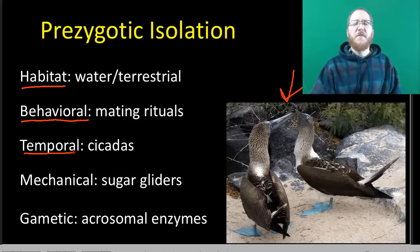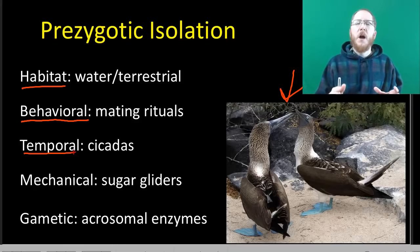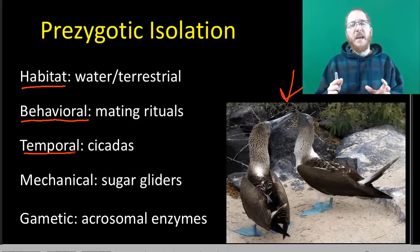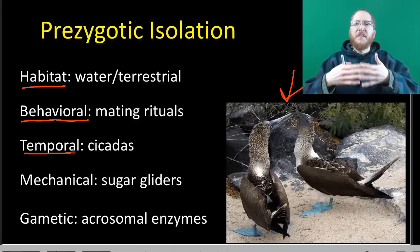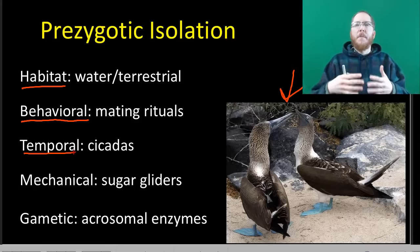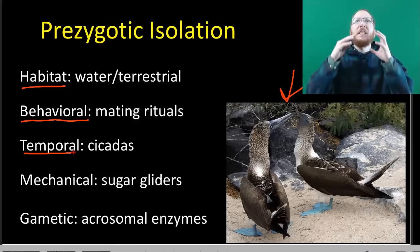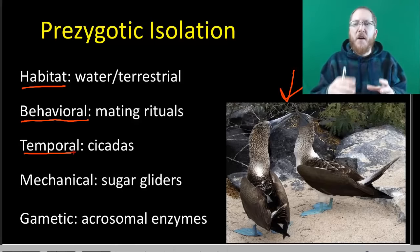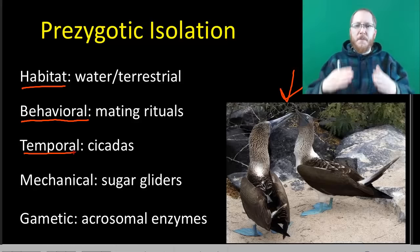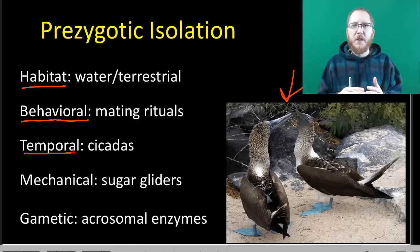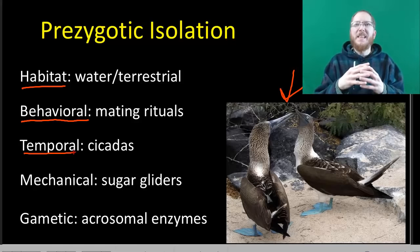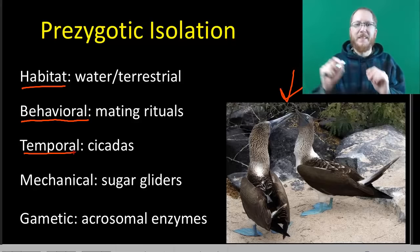Temporal isolation is if you're not reproducing at the same time. For instance, we have cicadas where periodic cicadas usually come out around July, and then there are dog day cicadas that come out in August. If they're not out trying to reproduce at the same time, they will not come into contact with each other, even if they're in the exact same place, the exact same environment, the exact same trees — because they're offset in time. So the habitat might be identical, the behaviors could even be identical, but they're just never going to be at the same place at the same time.